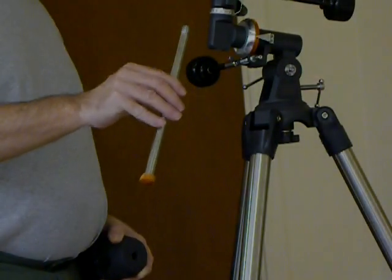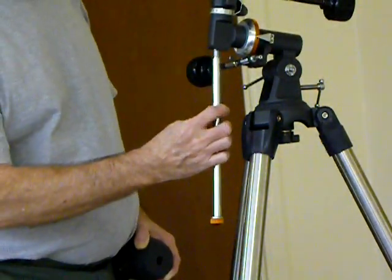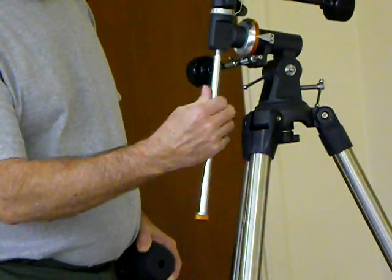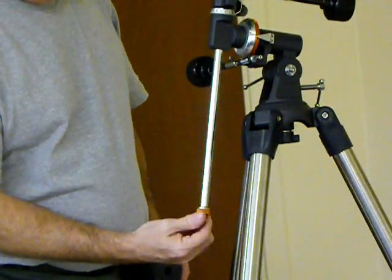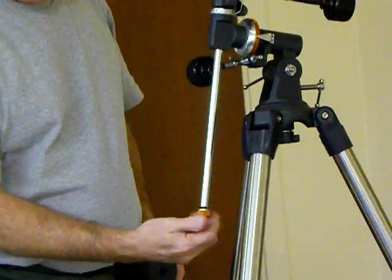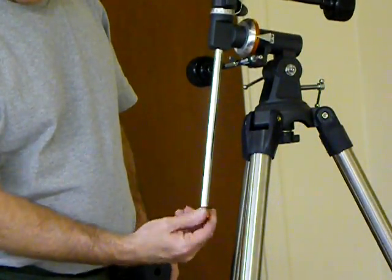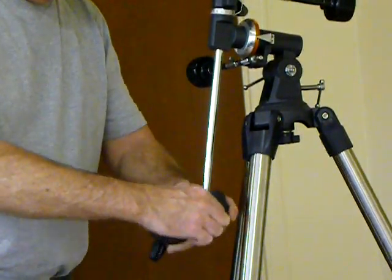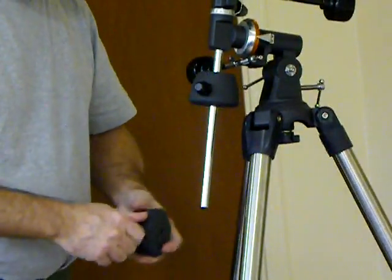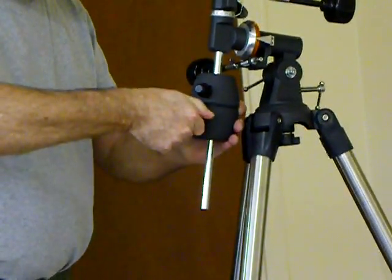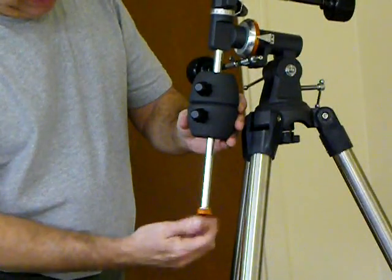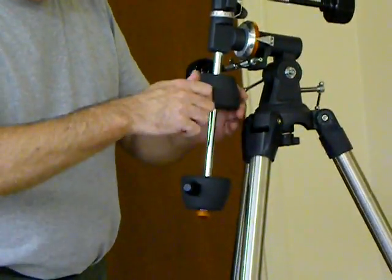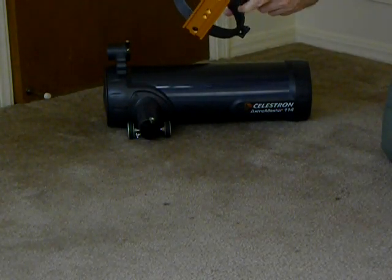Next to go on is the rod for the counterbalance. Goes right in here, screws in. Then you remove this retaining bolt, slip the weights on, replace the retaining bolt.